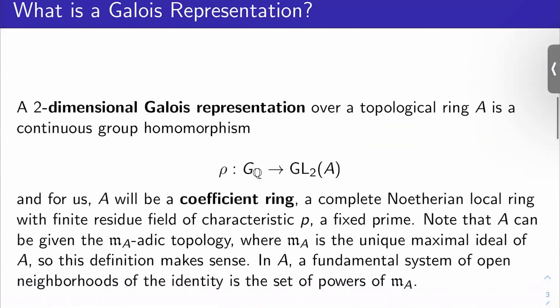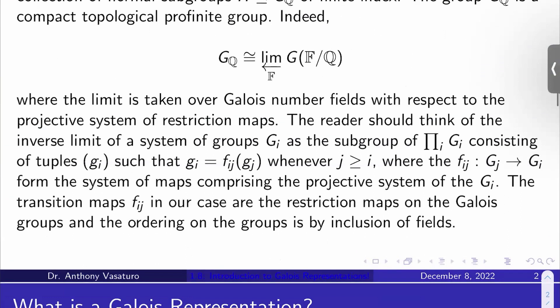So we have this. So in our case, the f_ijs are just the restriction maps on the Galois groups. So if I have one field sitting inside of another one, then there's a restriction map from the Galois group of the bigger number field to the Galois group of the smaller number field, and those are the f_ijs.